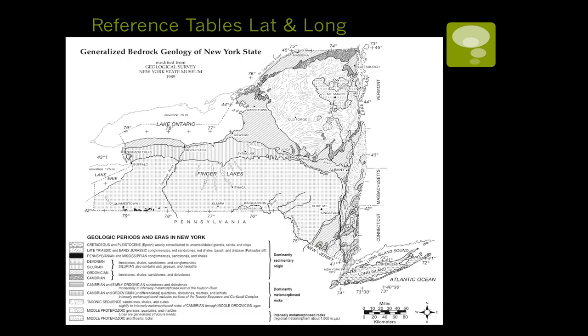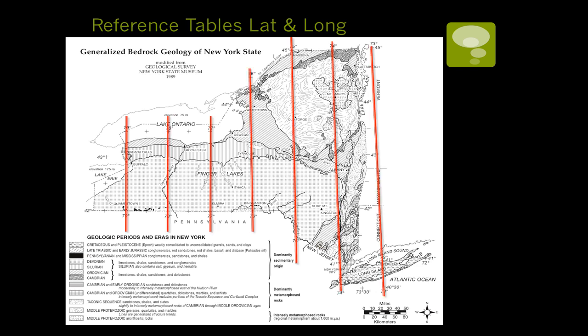In your reference tables, there are several maps that use latitude and longitude. Here is the map of New York State. This map has a large amount of information, most of which you may not have learned yet. But these lines connecting the numbers across the top and bottom are your longitude lines — they range from 73 degrees to 79 degrees. Here are the lines of latitude, from 41 up to 45. The two of them together allow you to locate coordinate system locations here in New York State.